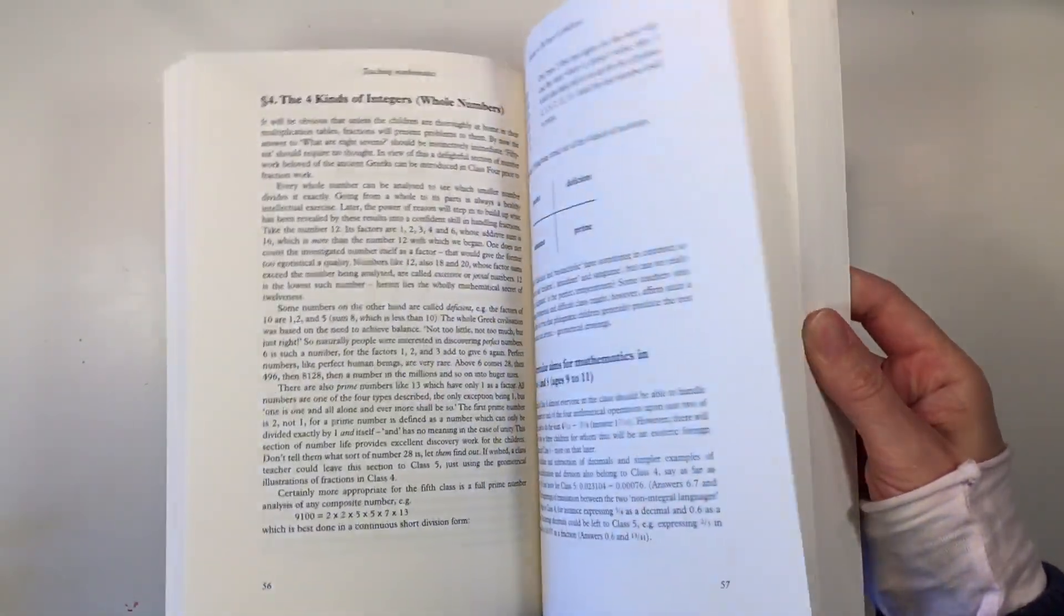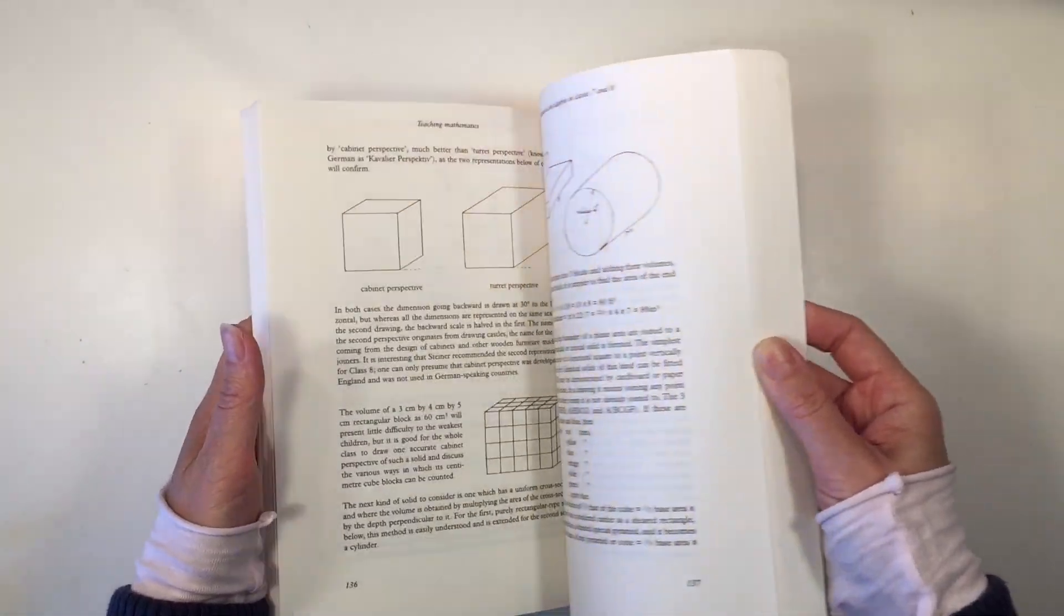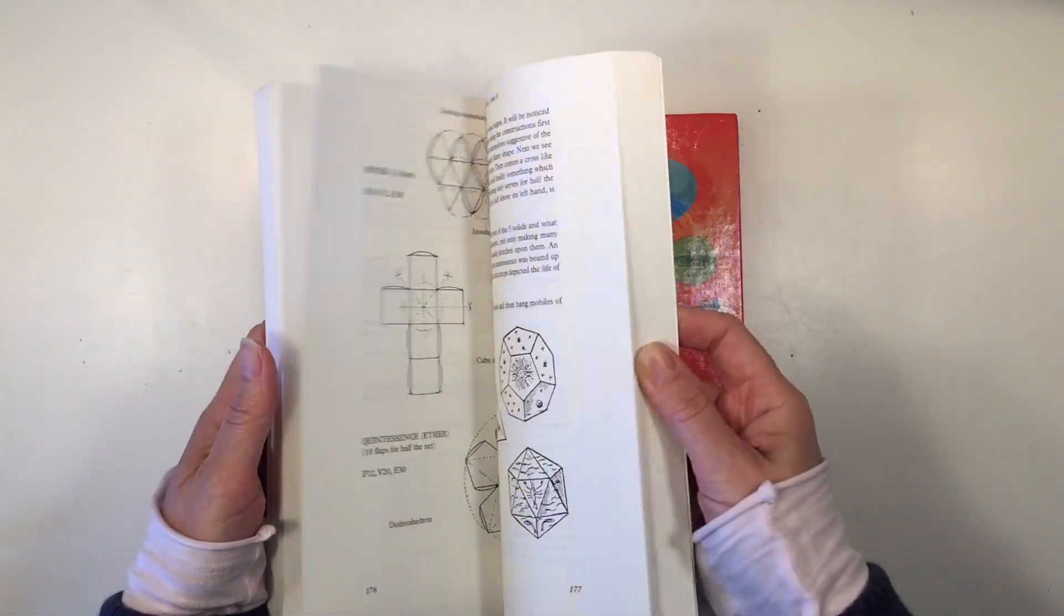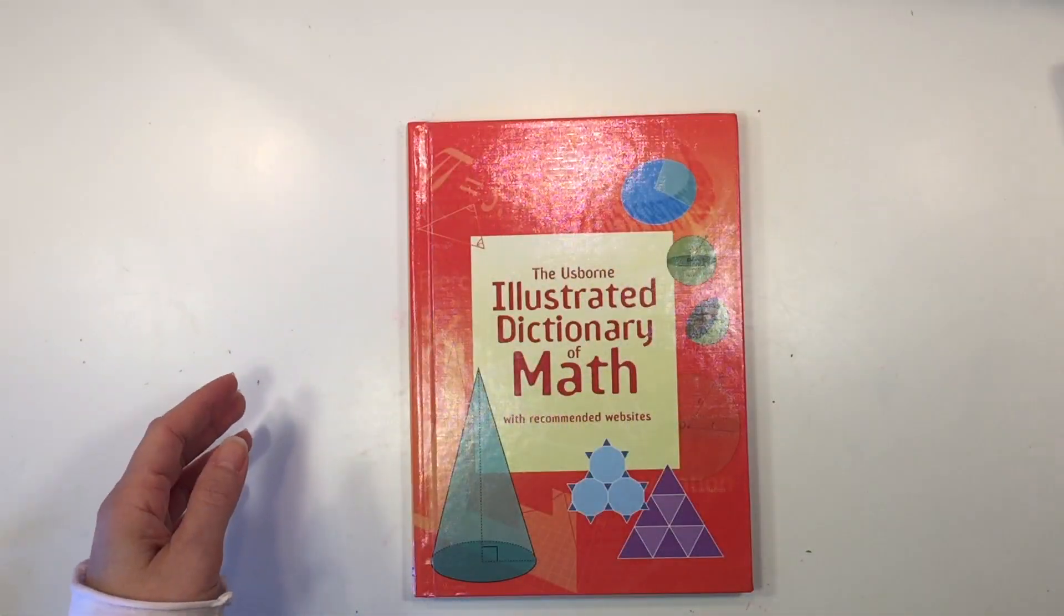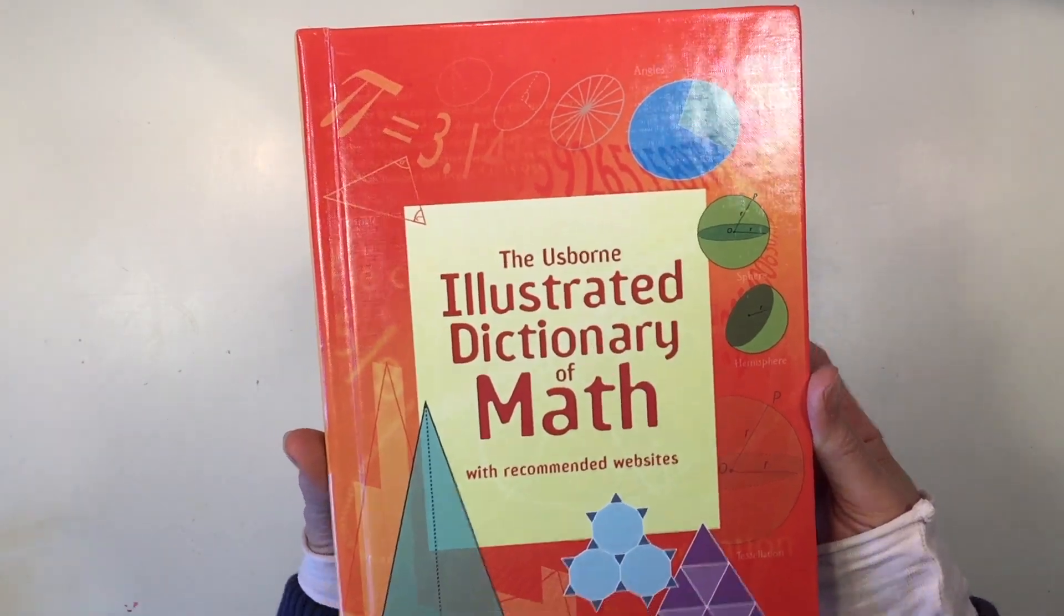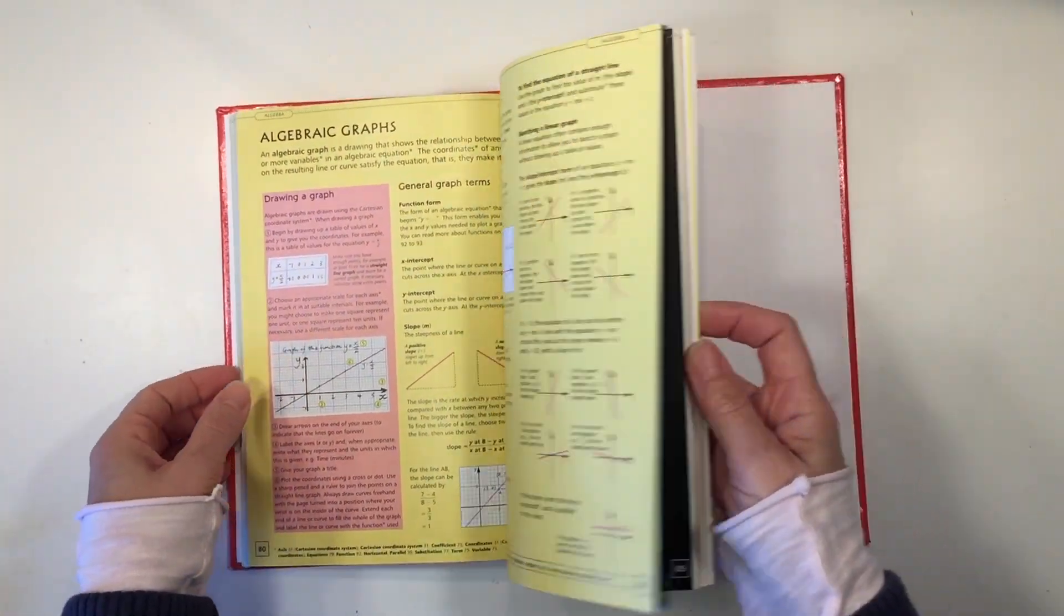So I got some questions after this video whether or not this would make a good reference material even if you're not using a Waldorf curriculum. I thought that I would share with you this book, which is the Osborne Illustrated Dictionary of Math, and I think that this would probably make a better reference material.